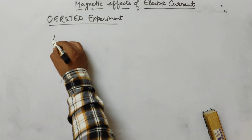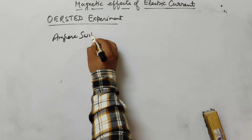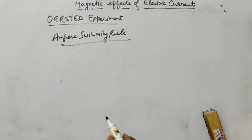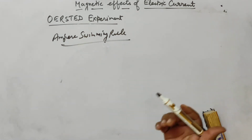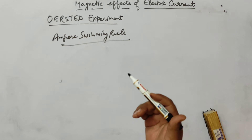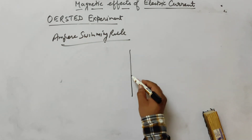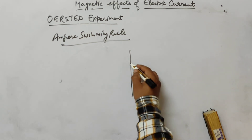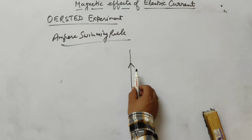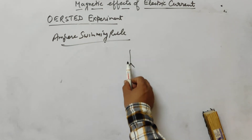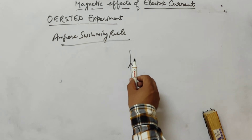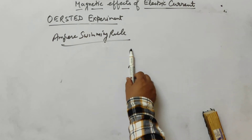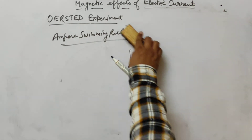After Oersted, there was Ampere's swimming rule. It states: imagine an observer swimming along the conductor in the direction of current, facing the magnetic needle. Then the north pole of the needle will be deflected towards the observer's left hand.